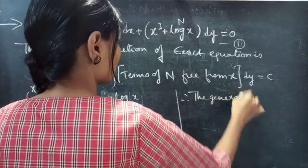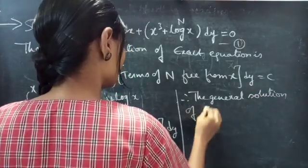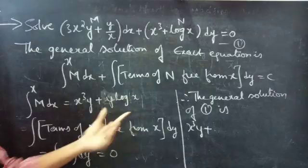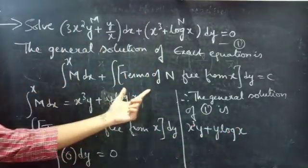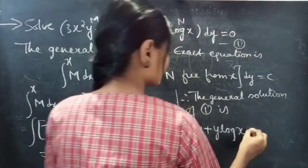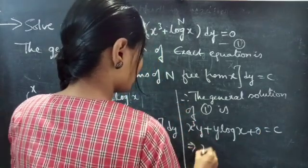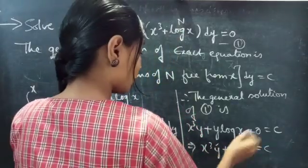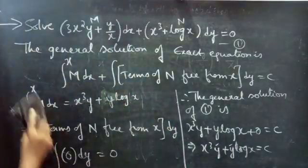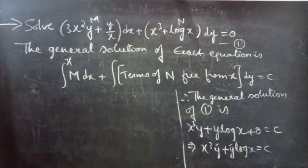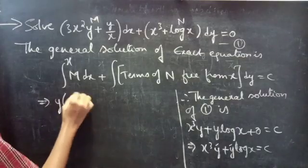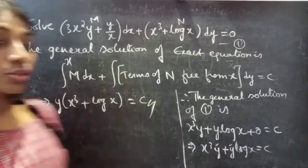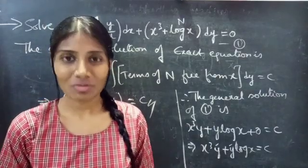Therefore, the general solution of equation 1 is: the result from the first integral, x³y + y log x, plus the result from the second integral, 0, equals a constant. So x³y + y log x = C is the required solution. You can factor out y from these two terms, and the general solution becomes y(x³ + log x) = C. So we have solved a problem from exact equations in this video. Hope you understood — we will see you in the next video, until then bye bye.